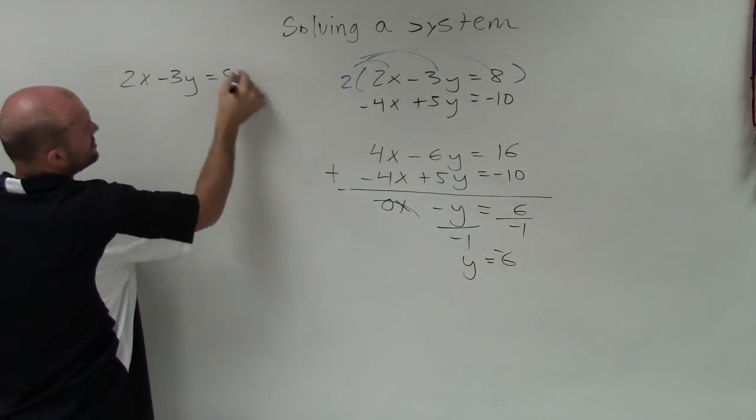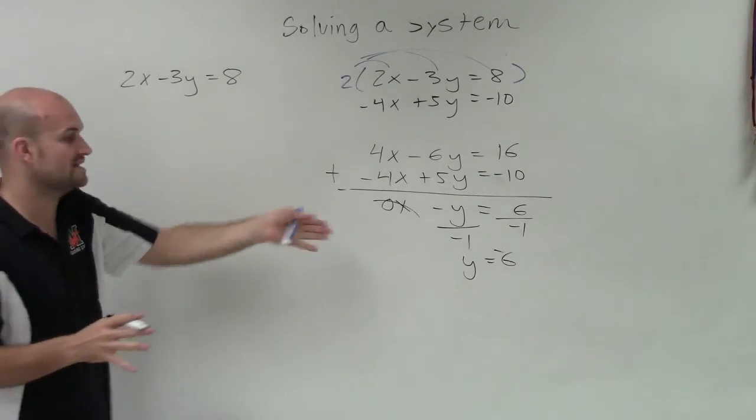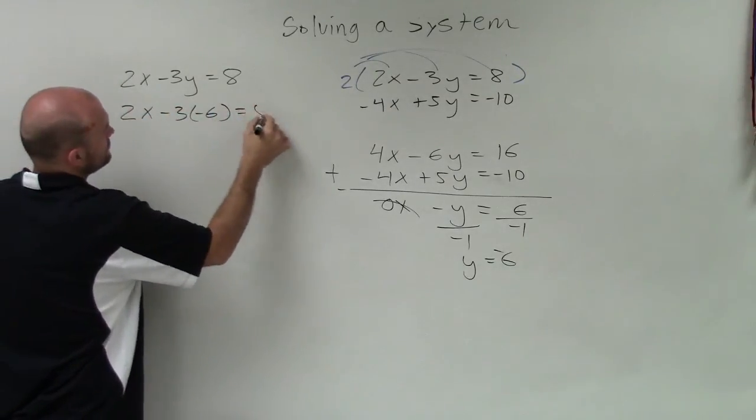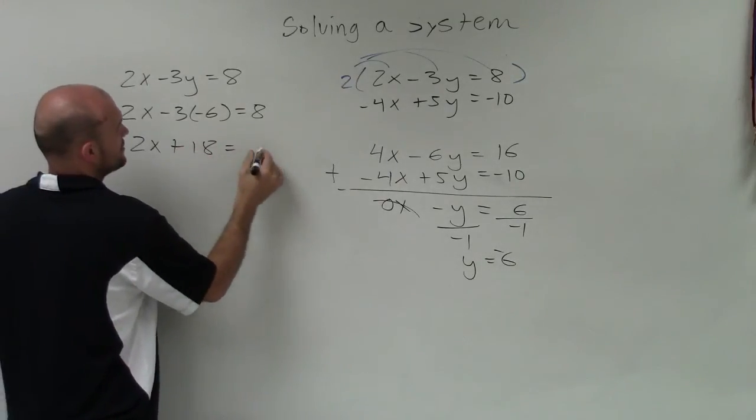So therefore, I'll just use this original first equation. Now I know that the value of y that makes this system true is negative 6. So I'll plug in negative 6 for my y. So I get 2x plus 18 equals 8.